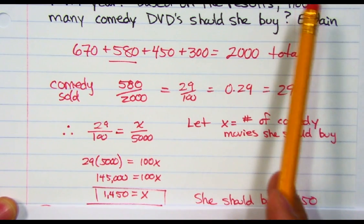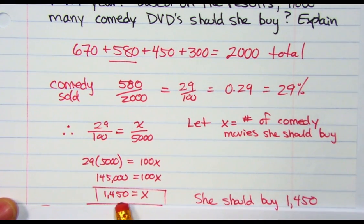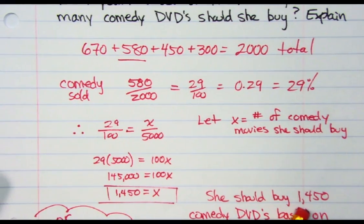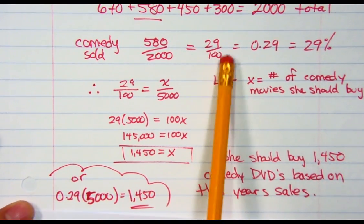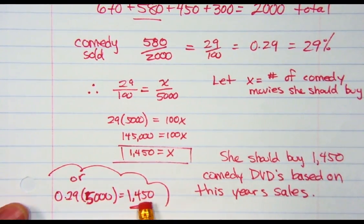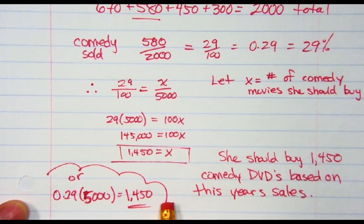If we expect to sell 5,000, then 1,450 of those would be comedy movies. That's how many they should buy. We could also think 29% of 5,000 is that same amount. I just did it two different ways for you.